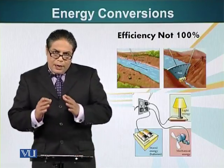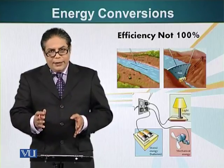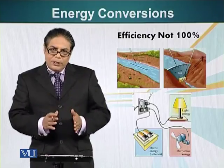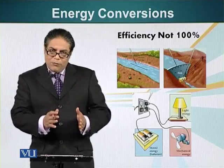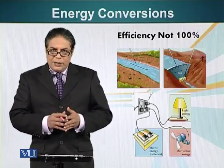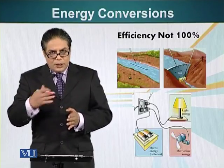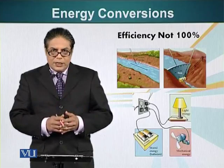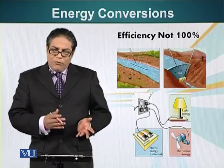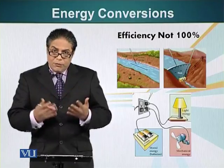Energy can be converted from one form to another. For example, if a river is running, it has kinetic energy because it is the energy of motion. If we put a dam in the way of the river, we block the flow of water — that kinetic energy has been converted into potential energy. When we release water from the dam, it helps us turn turbines and generate electricity. That electricity in our homes can be converted into different forms, such as light, heat, or the mechanical energy of a fan.